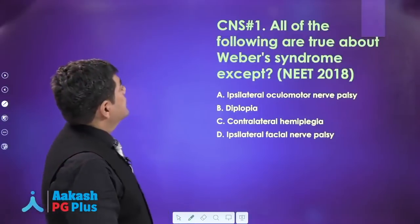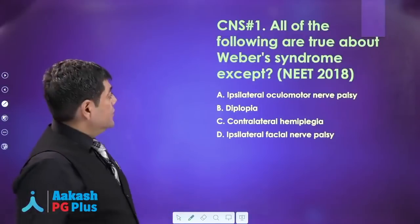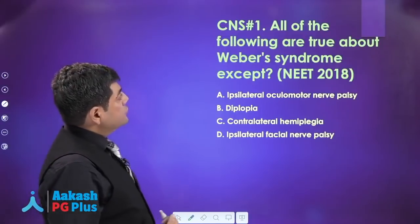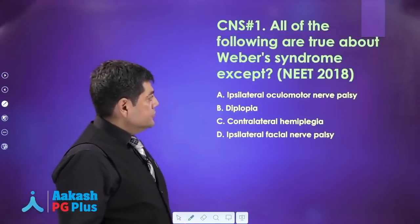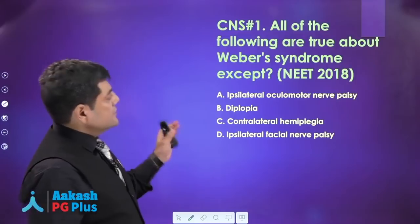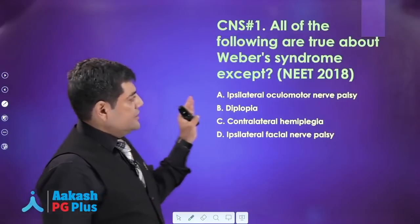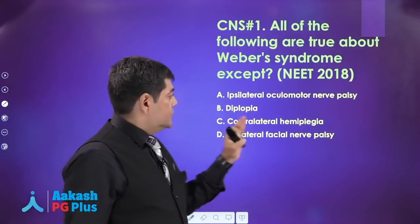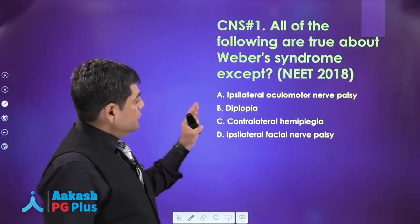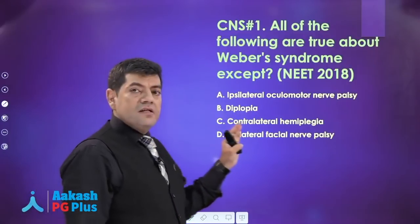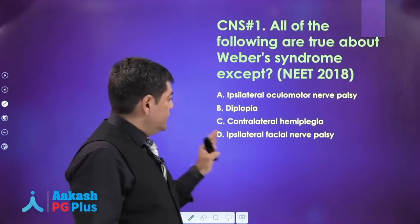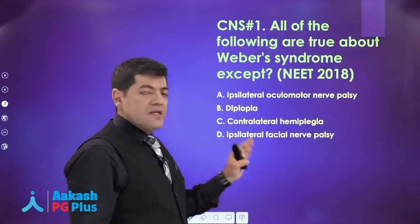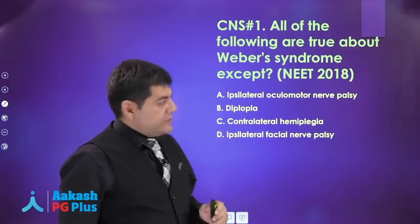Moving on, a neuro question now. All the following are true about Weber syndrome except — the choices are: ipsilateral third nerve palsy, diplopia, contralateral hemiplegia, and ipsilateral seventh nerve palsy.